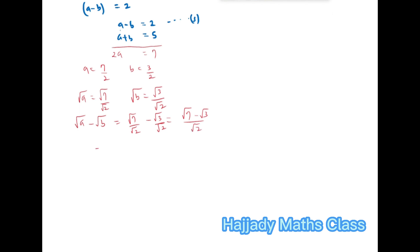And this is the same thing as (√7 - √3)/√2. Don't forget that we are having root as our denominator. So there's a need for us to rationalize. So by doing that, we're going to multiply both numerator and denominator by √2. So we're going to have (√14 - √6)/2.